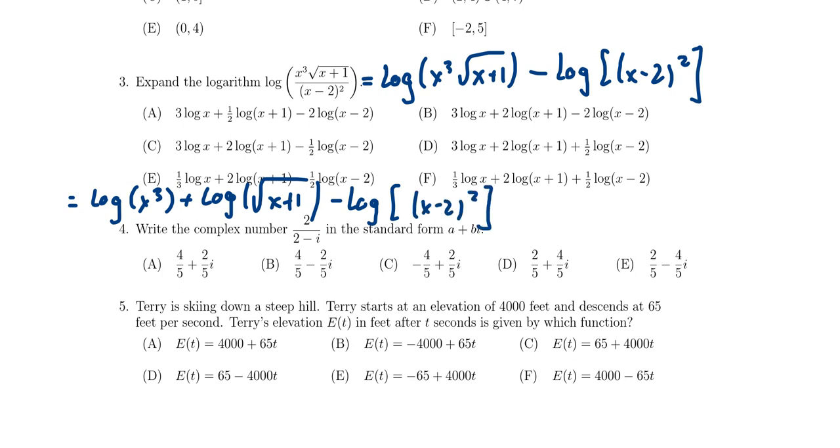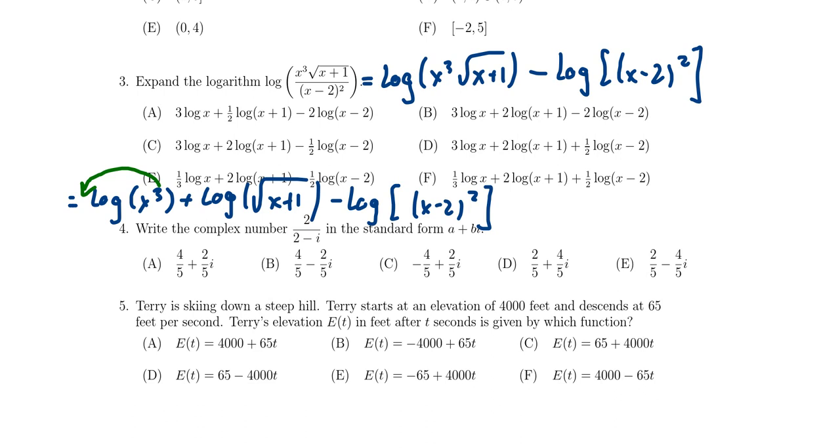And so then with all the remaining logarithms, there are exponents that can be pulled out. The x cubed, the exponent comes out as a 3. For the square root, it'll come out as a 1 half. And then for the minus log of x minus 2 squared, that 2 would come out as a coefficient.